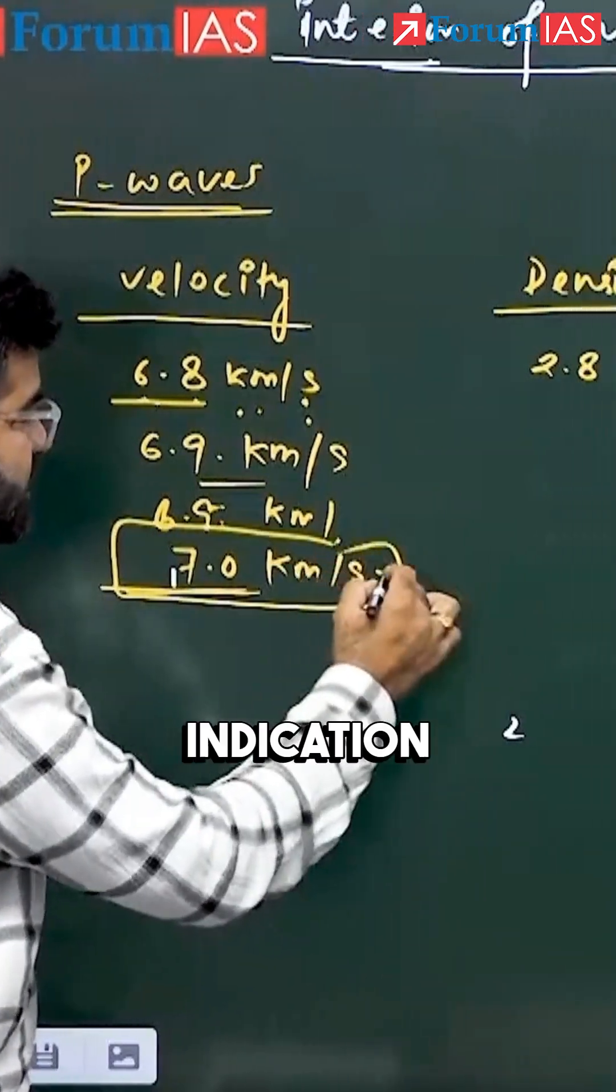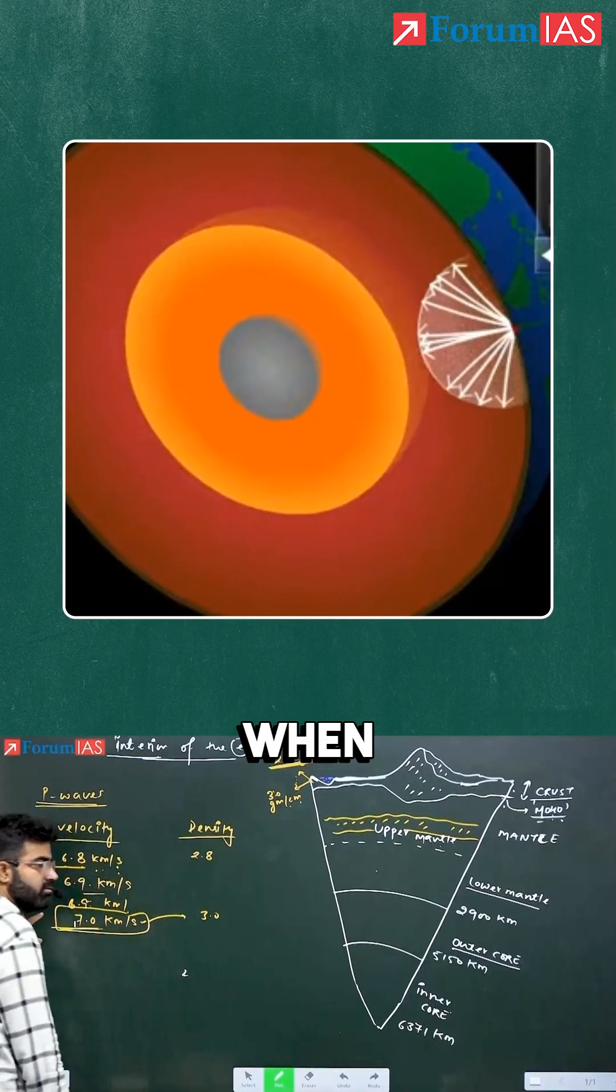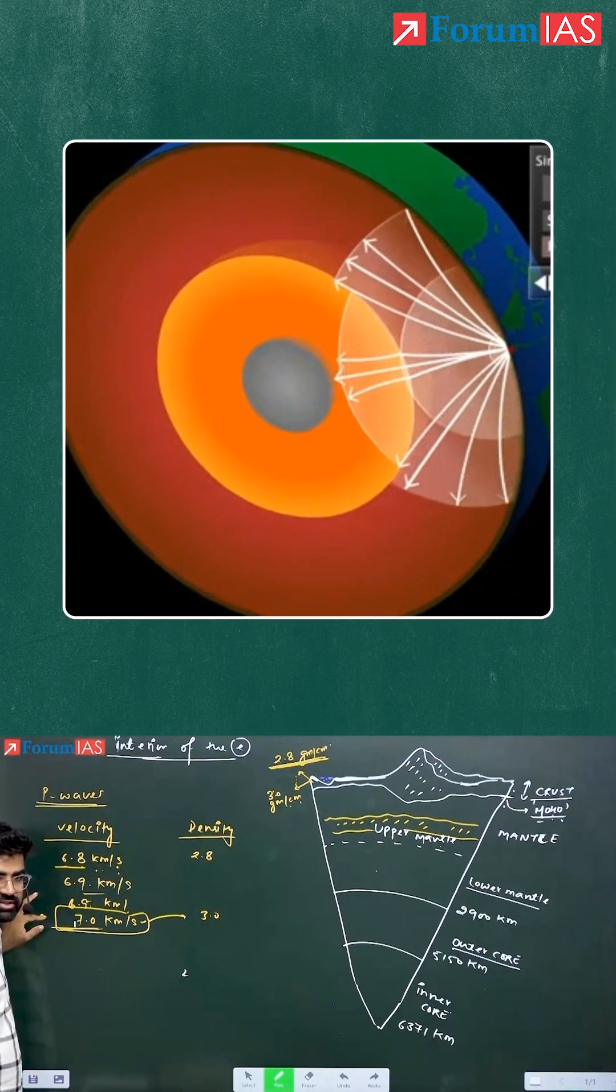So how we came to know that the density is also increasing? Because of the velocity. When the P-waves were passing through the crust area, now what happens is let's say we have arrived in this zone.